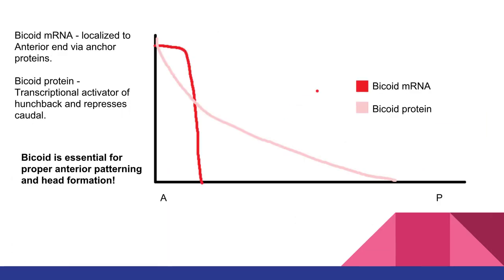Let's go into bicoid. Bicoid mRNA is actually localized to the anterior end via anchor proteins. On our graph, we can see the red bicoid mRNA has very high levels at the anterior end, and it sharply drops off because there's no gradation of that bicoid mRNA. The bicoid protein forms when the egg gets fertilized — it's the transcriptional activator of hunchback, and it also represses caudal.